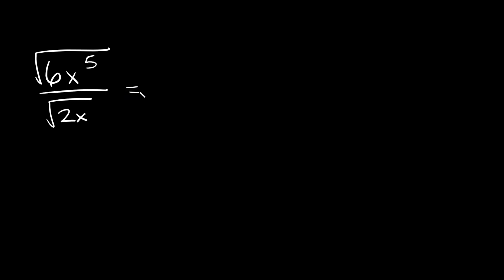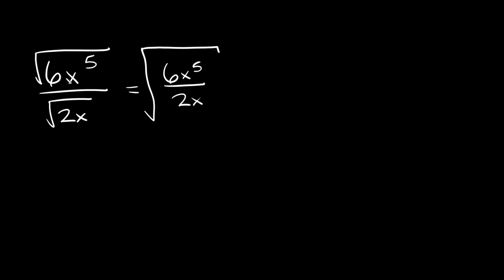One thing we can do here is basically just combine our two radicals into one big radical. So on top we're going to have 6x to the fifth over 2x. We took both radicals and combined them inside of one big radical like that. Now we can start simplifying what's inside of this fraction.